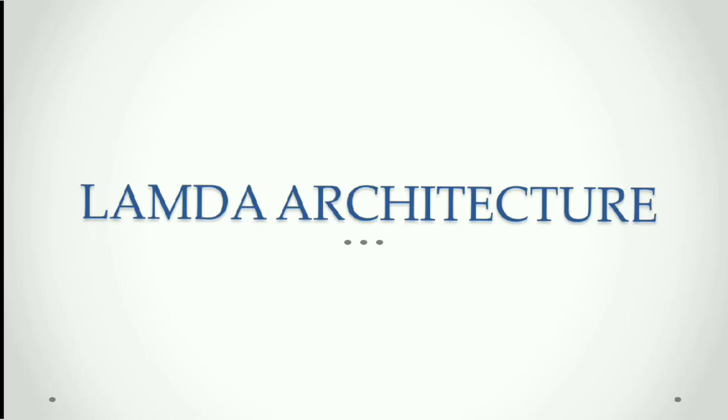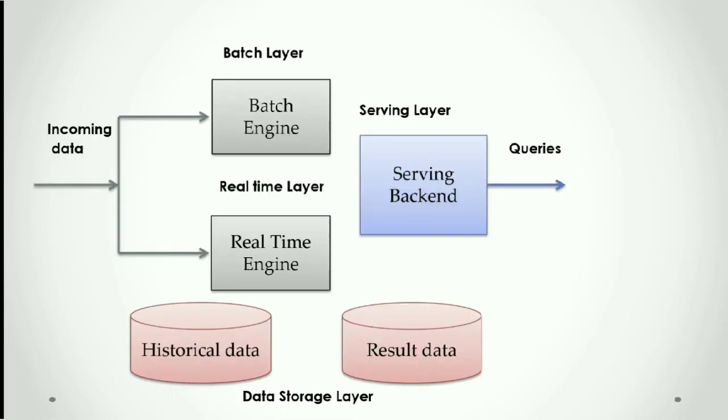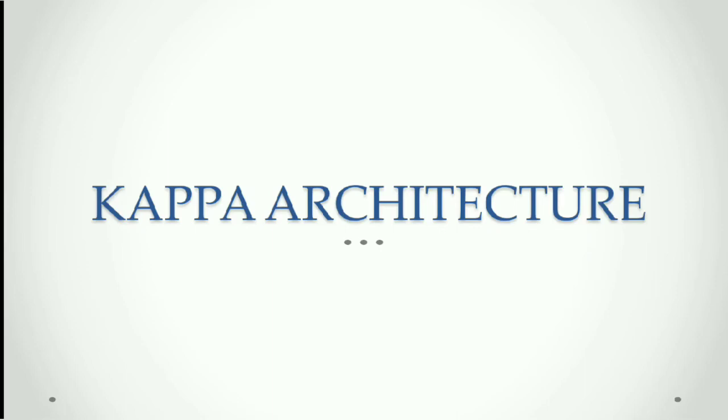There are two types of architecture followed for the making of real-time big data pipeline: lambda architecture and kappa architecture. This is the block diagram of lambda architecture. There are mainly three purposes of lambda architecture: ingest, process, and query real-time and batch data.